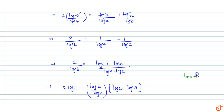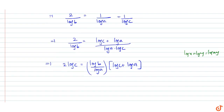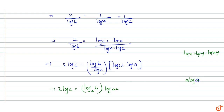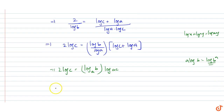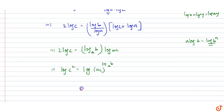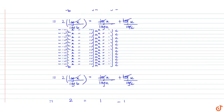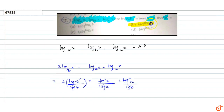Now we know that log x plus log y can be written as log of xy. So twice of log C equals log B to the base A into log of AC. And we know that a·log b can be written as log of b to the power a. So log of c² is equal to log of AC to the power log B to the base A, that means c² is equal to AC to the power log B to the base A. So this is our answer, and option B is the correct answer.